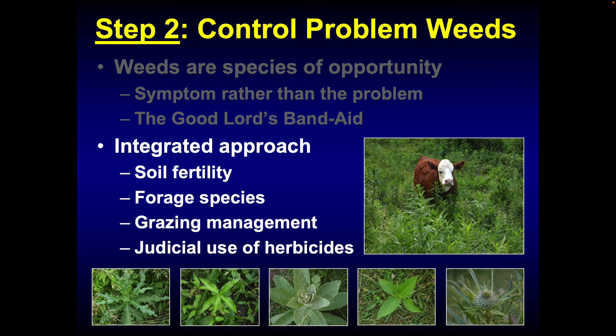We need an integrated weed control program. It starts with things like making sure your soil fertility is right, making sure you have well-adapted forage species. You've got to ask yourself about your grazing management — how's your stocking rate? Am I resting my pastures between grazing events? The last thing in the integrated weed control program would be herbicide use. I'm not against herbicides, but they don't work as well if you don't have all these other things happening at the same time. You've got to figure out why you've lost that stand and get something in those holes that will be productive.